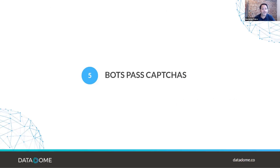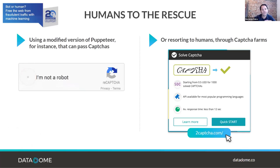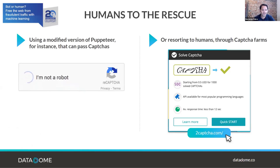Bots are also now able to pass CAPTCHAs. Websites and mobile applications have used CAPTCHAs for protection, but with two techniques bots can evade them: using headless Puppeteer with AI and machine learning for image recognition, or using CAPTCHA-solving services where humans are involved — sometimes it's even cheaper to use humans than to compute AI.